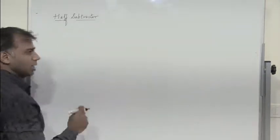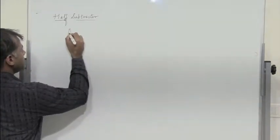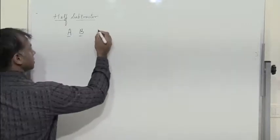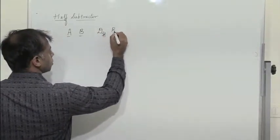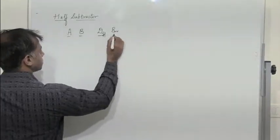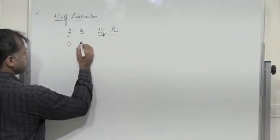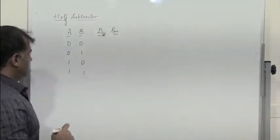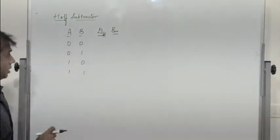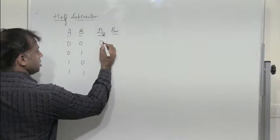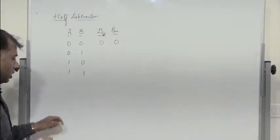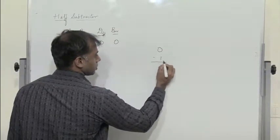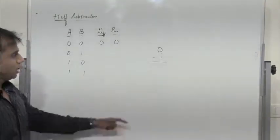When we talk about a half subtractor, we have two binary bits A and B, and since we are subtracting, there is a difference and there is a borrow. So we have two binary bits: 0-0, 0-1, 1-0, 1-1. These two bits have to be subtracted. So 0 minus 0: difference is 0, borrow is 0. When we talk about 0-1, during binary subtraction we have discussed this.